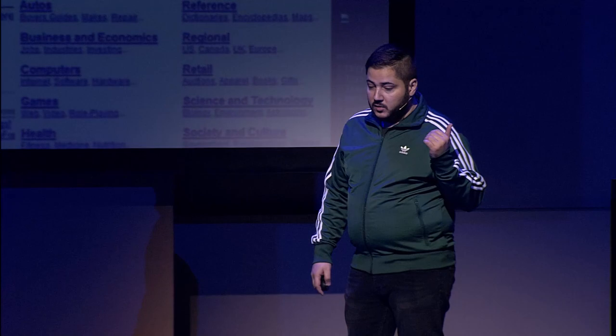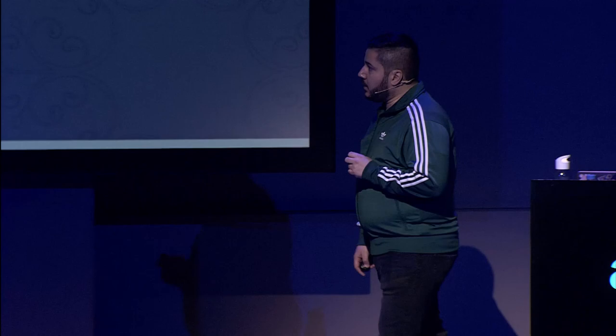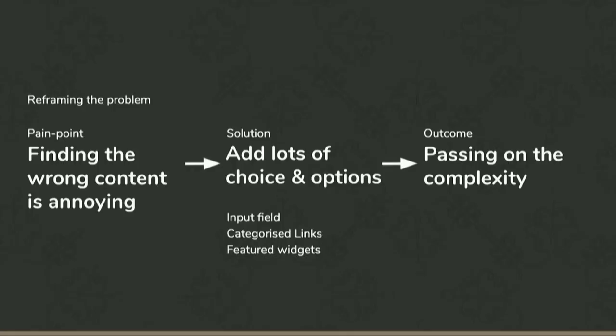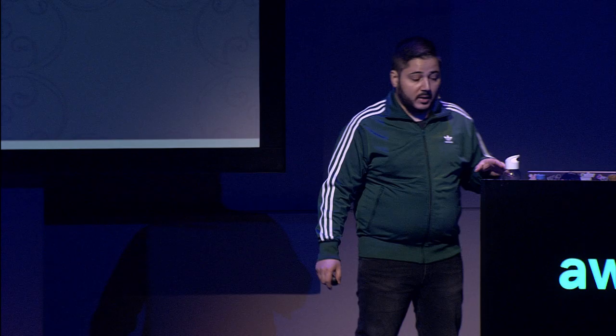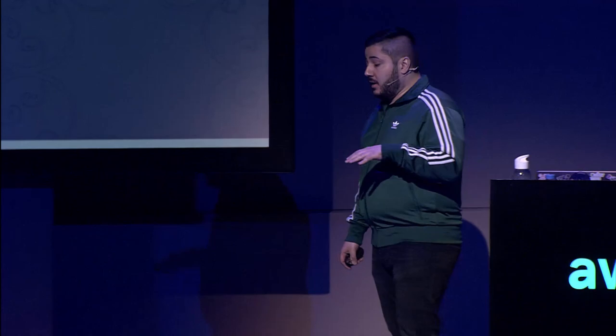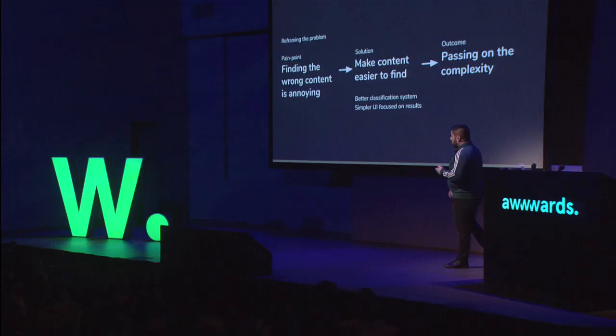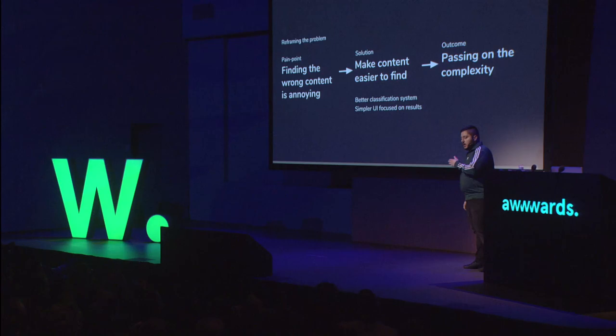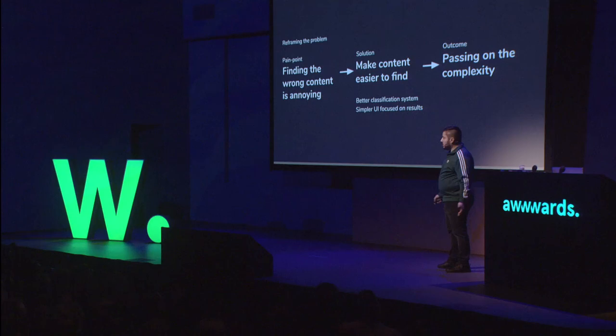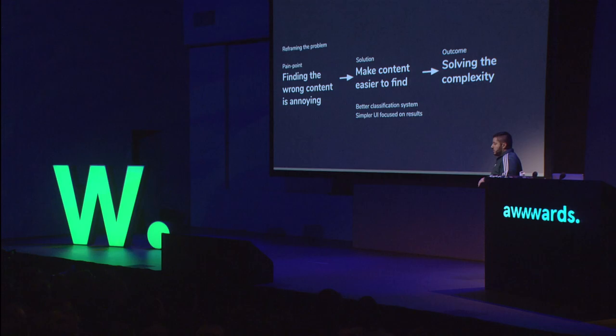Often it's the opposite effect. The more powerful thing to do is to remove features, because then you focus the experience. So, reframing: finding the wrong content is annoying. The founders at Google were PhD students who knew that in academia, how you classify good science is citations — the more citations, the better the paper. So you replace citations with the concept of links. Now you only need three pieces of UI: a search input field and two buttons. That was a radical thing at the time. Instead of passing on the complexity, you solve the complexity.